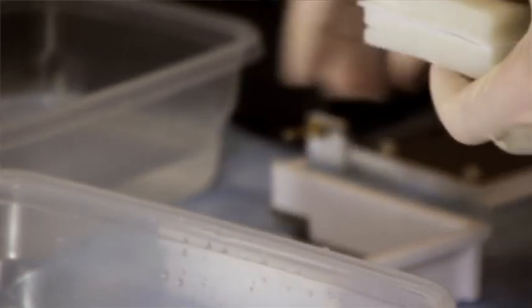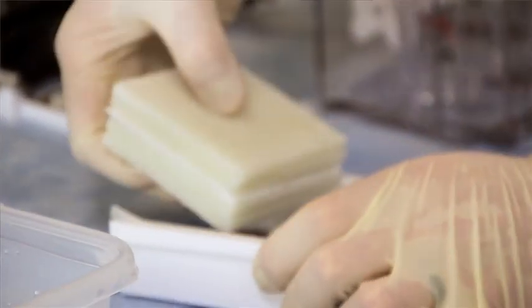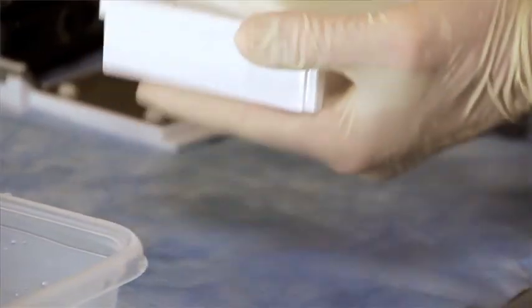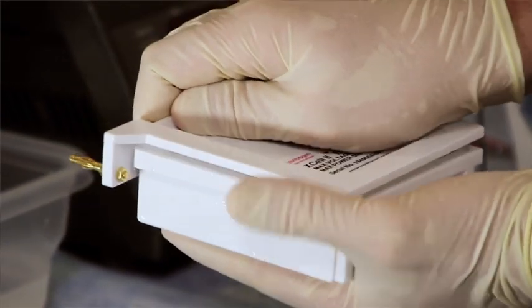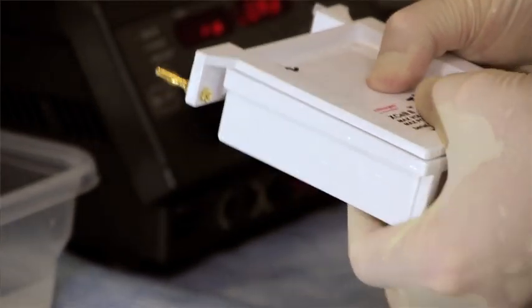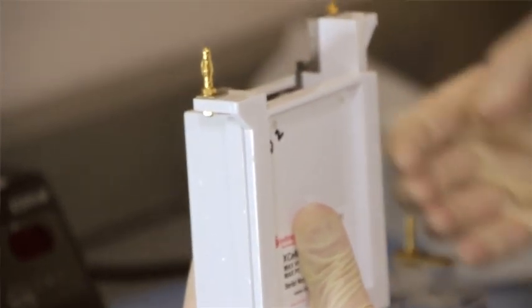And this whole stack goes into the blot module such that the membrane is on the positive electrode side and the gel is on the negative electrode side.